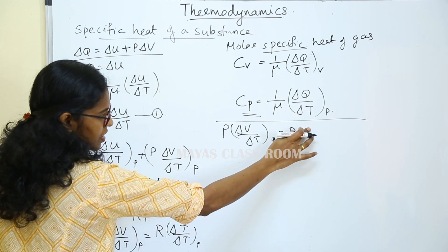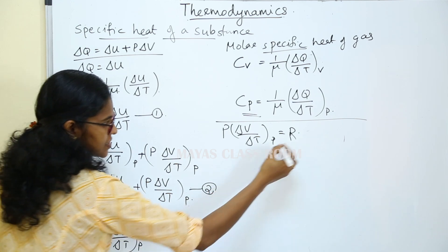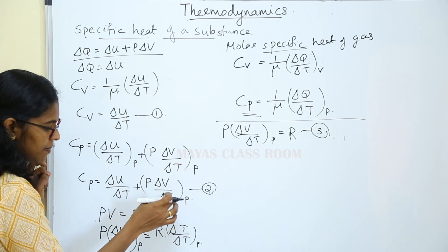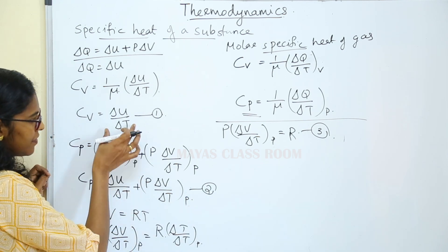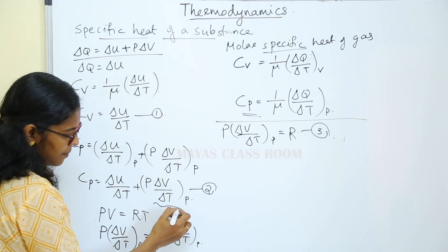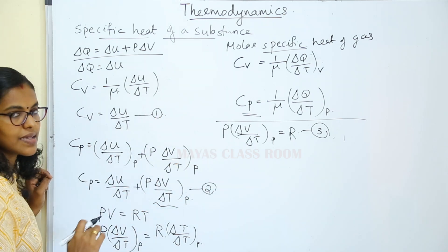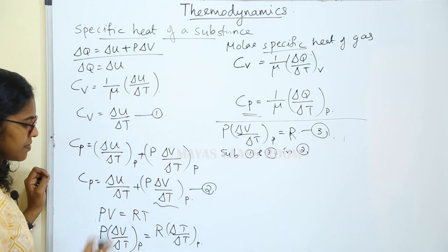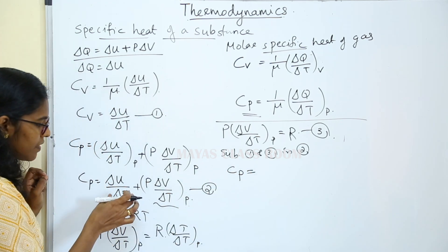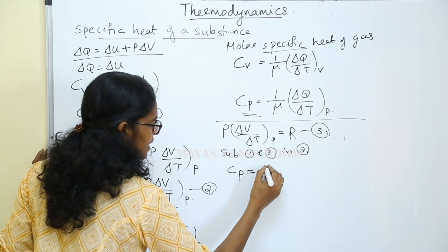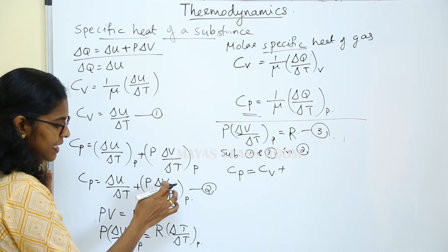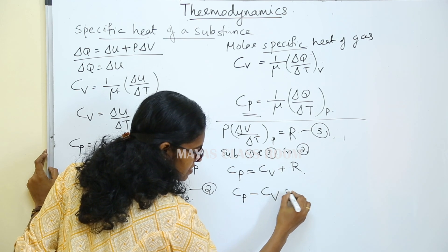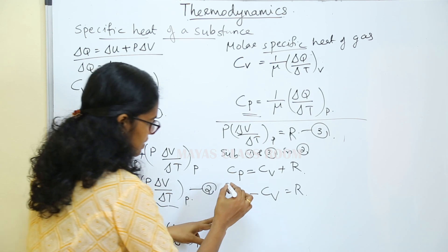So this will cancel. CP is equal to delta U by delta T plus P delta V by delta T. We have equation 1: CV equals delta U by delta T at constant volume. Equation 3: P delta V by delta T equals R. We substitute equations 1 and 3 into equation 2. Therefore CP is equal to CV plus R. That gives CP minus CV is equal to R.